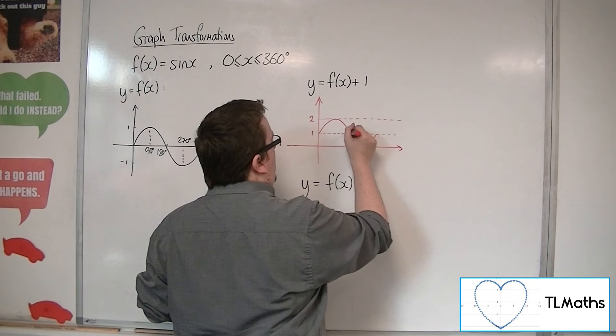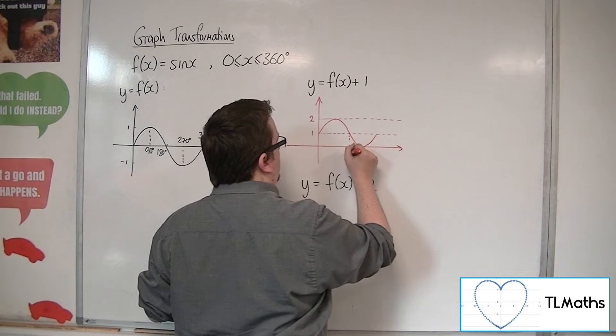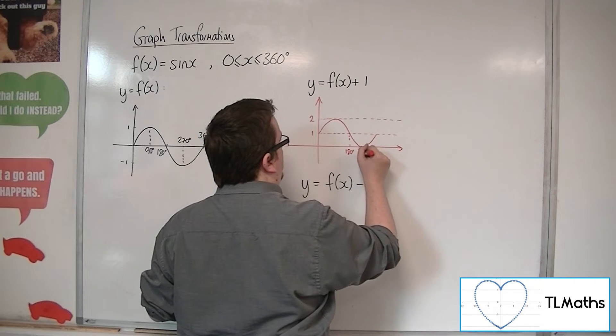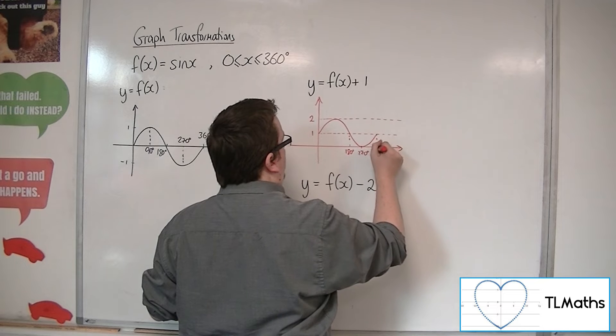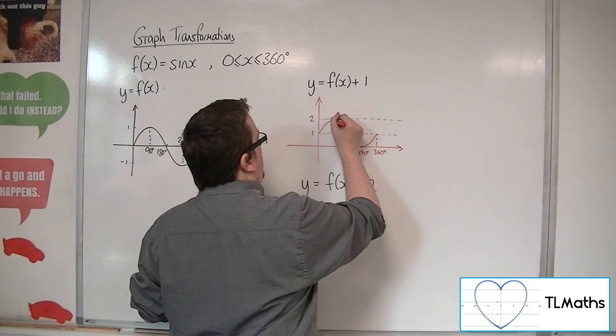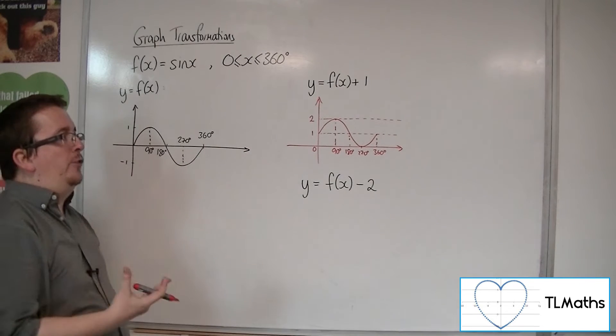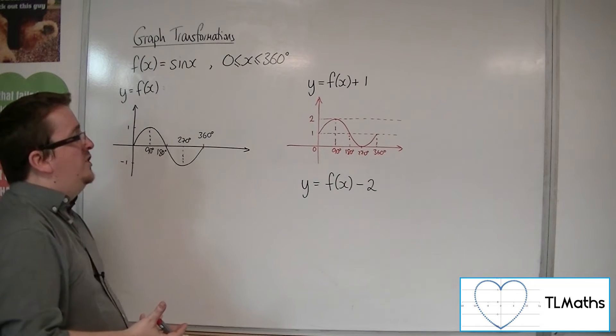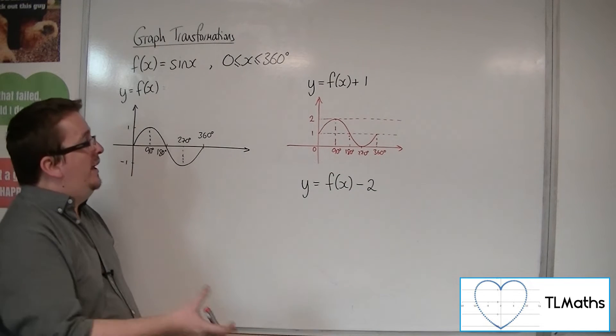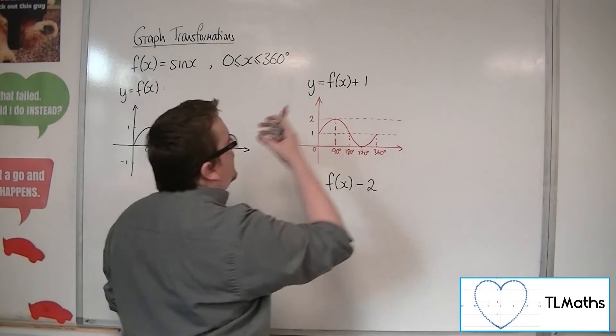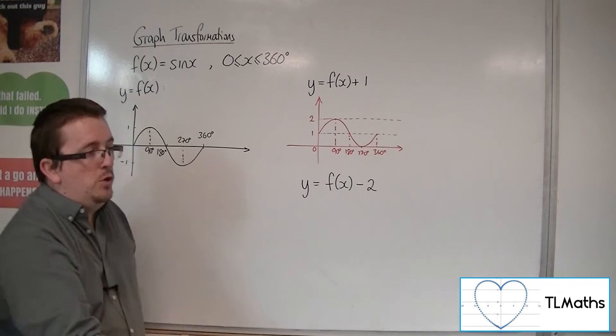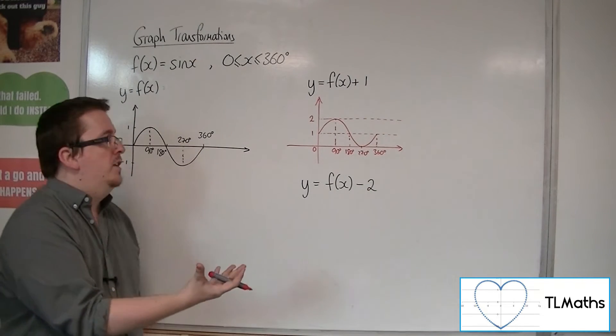So there's 180 degrees, there's 270, there's 360, there's 90, and there's 0. And that's what the curve will look like when I just add 1. So clearly, from that, I can identify that adding 1 has moved the graph up 1 unit.